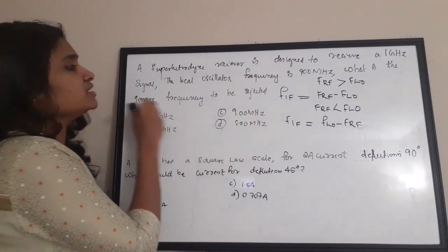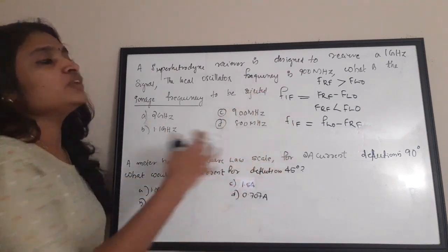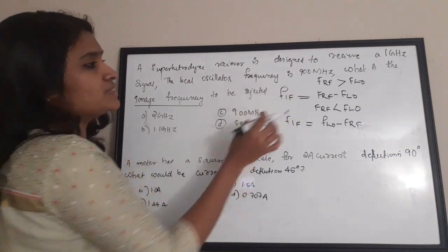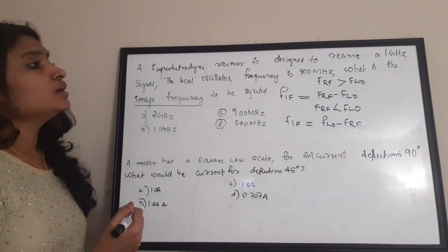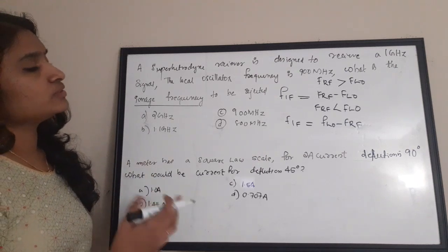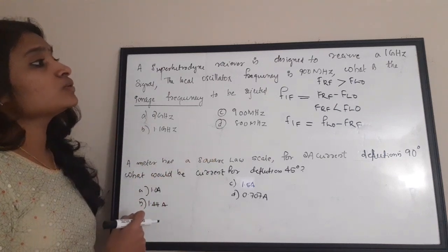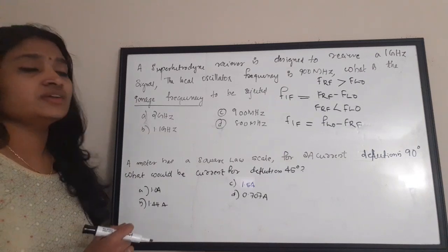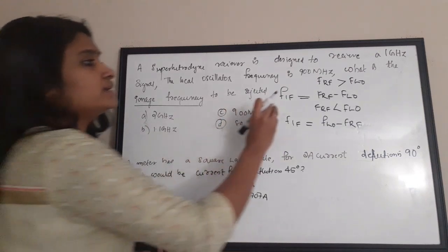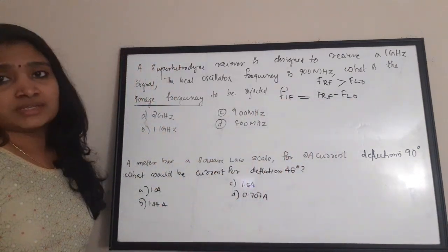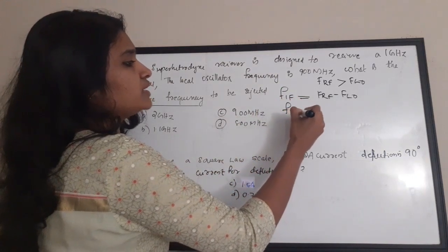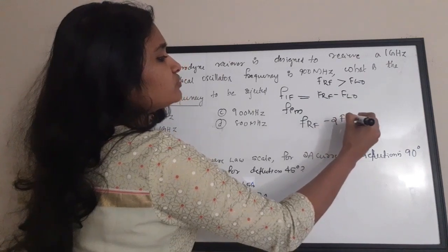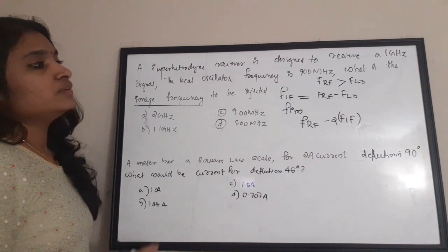The question asks for the image frequency. You should know these two equations for the intermediate frequency. The RF wave is 1 gigahertz and the local oscillator is 900 megahertz, so FRF is greater than FLO. The image frequency equation is: FIM = FRF − 2×FIF.